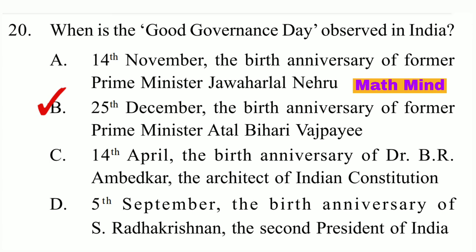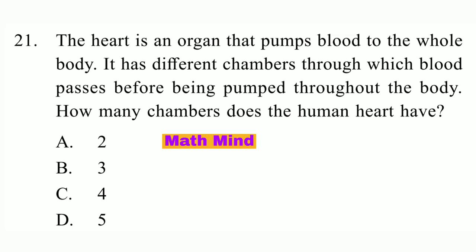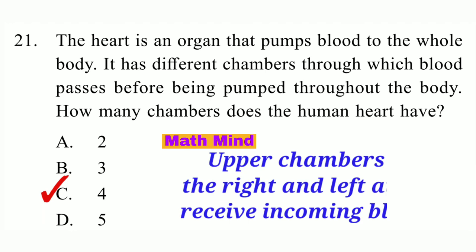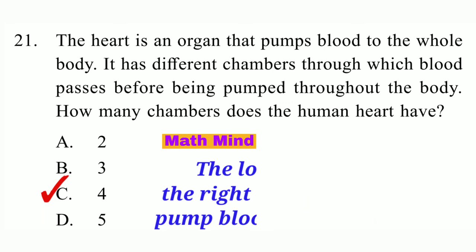Question No. 21. The heart is an organ that pumps blood to the whole body. It has different chambers through which blood passes before being pumped throughout the body. How many chambers does the human heart have? Option C is correct: Four chambers — two upper chambers and two lower chambers. The upper chambers, the right and left atria, receive incoming blood. The lower chambers, the right and left ventricles, pump blood out of the heart.